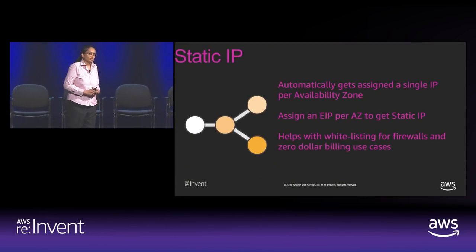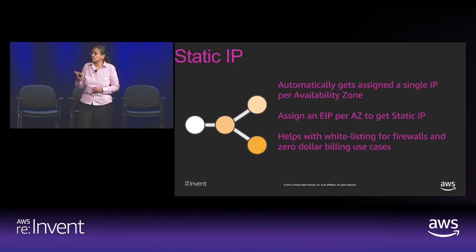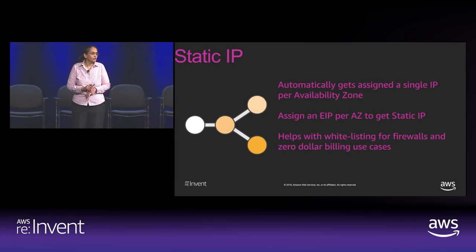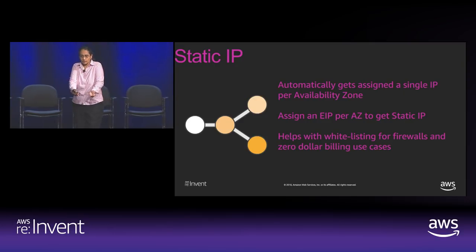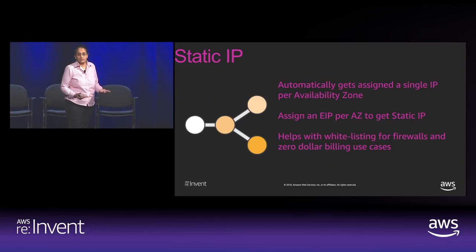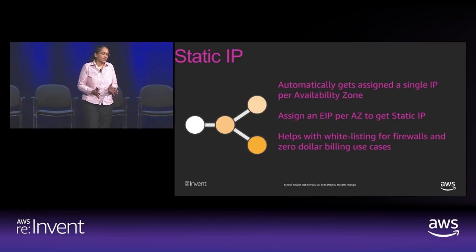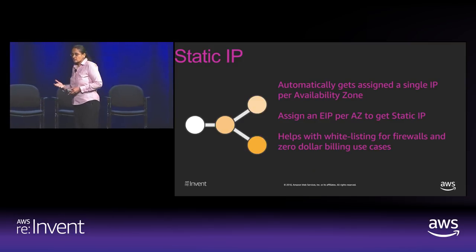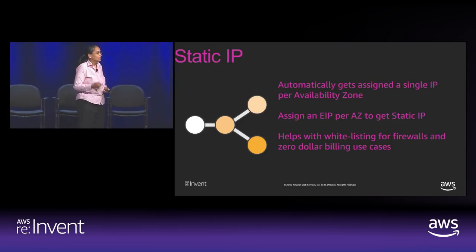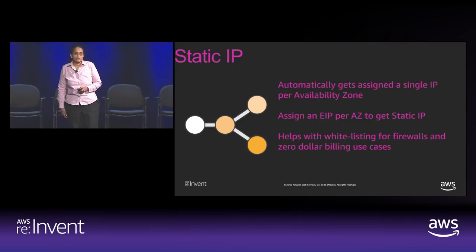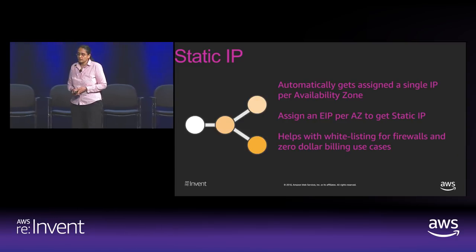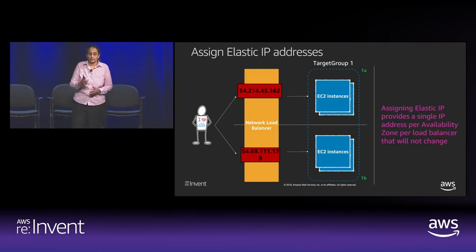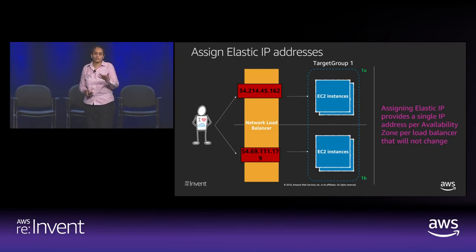Starting with the static IP feature: with the Network Load Balancer, you get a single IP per availability zone. If you don't want this IP to change for the life of the load balancer, you can assign an EIP from your VPC — we assign it to the Network Load Balancer, and if you delete the load balancer, we return the EIP to you. The single static IP enables many use cases — for example, you can whitelist your firewalls with a single IP, simplifying IP management and load balancer configuration. A lot of customers use this to zero out billing for specific mobile or other applications.